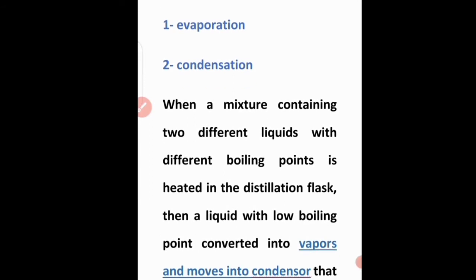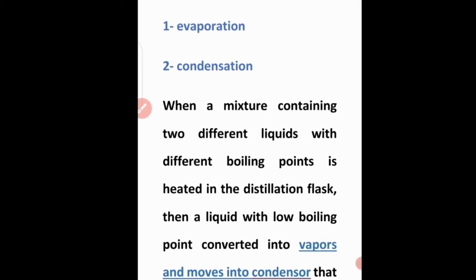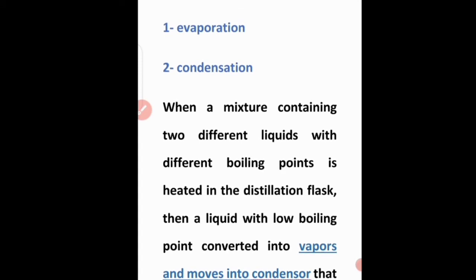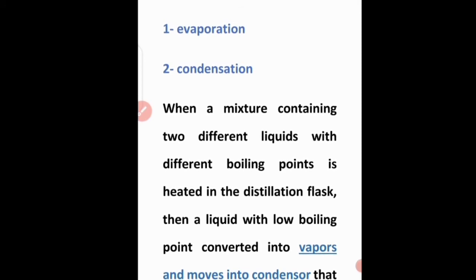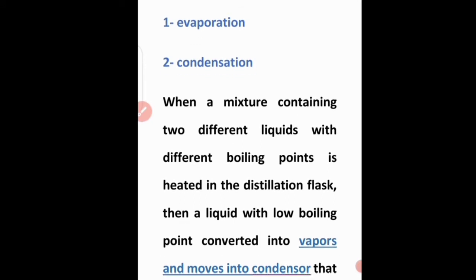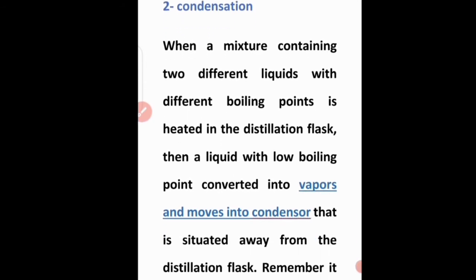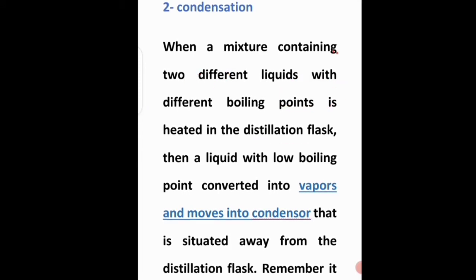When a mixture containing two different liquids with different boiling points is heated in the distillation flask, the liquid with the lower boiling point is converted into vapors first. For example, if one liquid boils at 3 degrees and another at 100 degrees, the one with the lower boiling point will quickly change into vapors and move into the condenser.